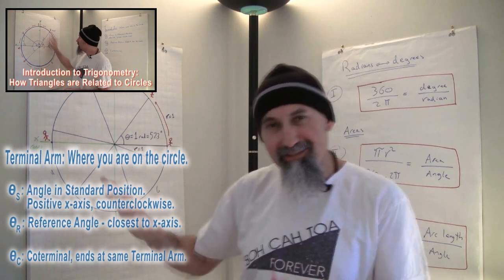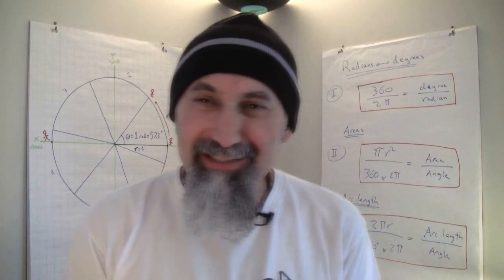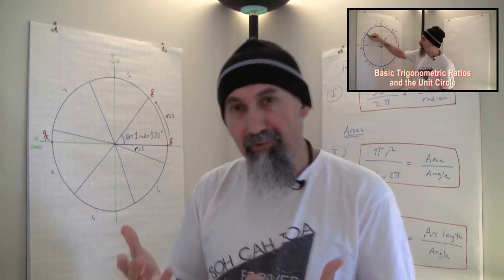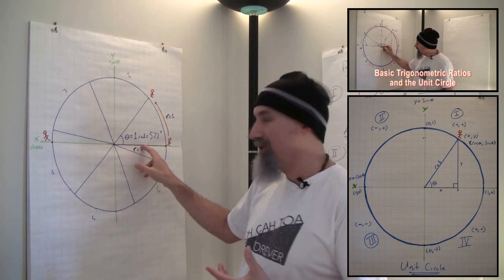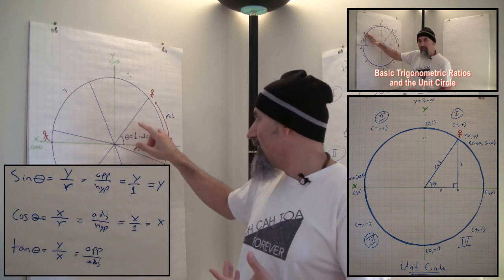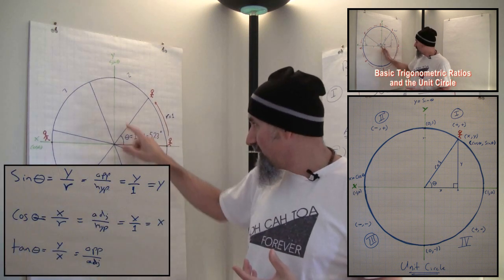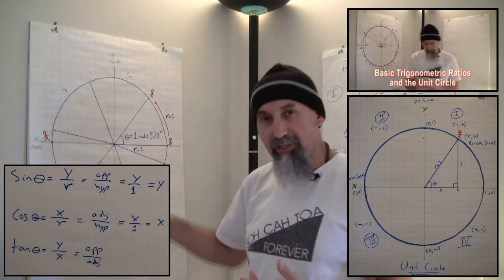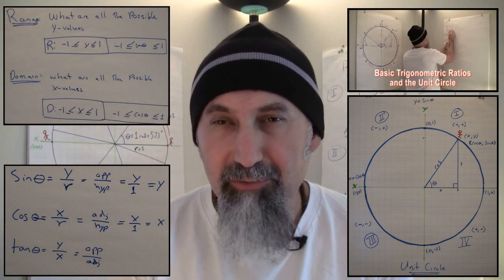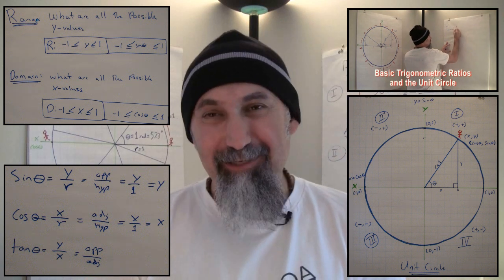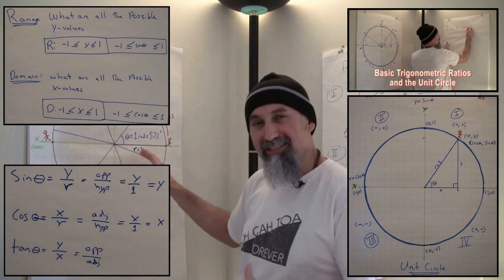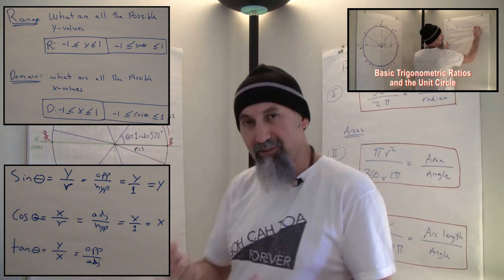From there, we introduced the concept of the trig ratios — taking a right angle triangle inside a circle and looking at the ratio of the sides compared to each other. Sine is opposite over hypotenuse, cosine is adjacent over hypotenuse, and tangent is opposite over adjacent — SOH CAH TOA. We gave those ratios the special names sine, cosine, and tangent. Then we standardized the circle by calling the radius one unit.